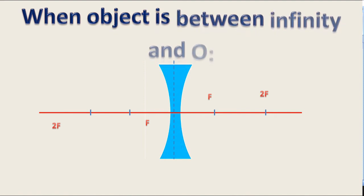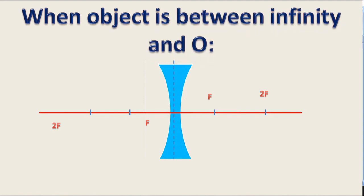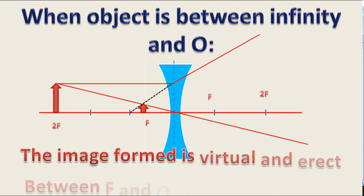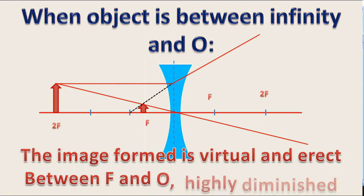When object is between infinity and O or optical center, the light coming from object diverges from F and the image is formed between F and O. The nature of image is virtual and erect, formed between F and O and highly diminished in size.